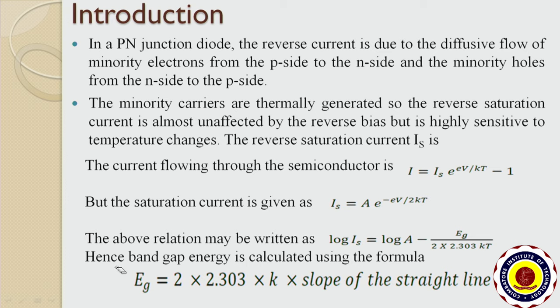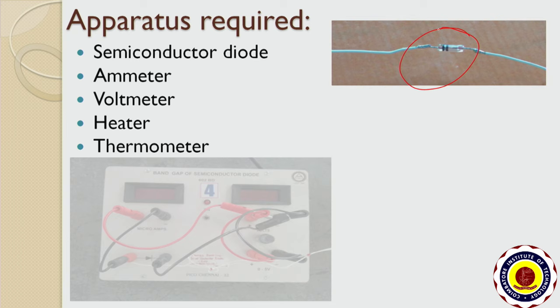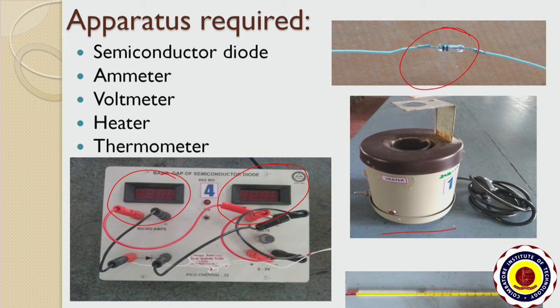The apparatus required for this experiment are: a semiconductor diode, an ammeter, a voltmeter — the voltmeter and ammeter displays are shown here — a heater, and a thermometer.